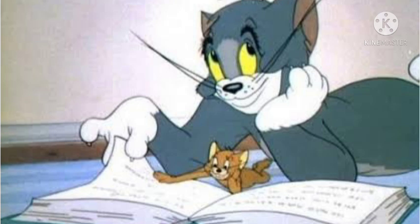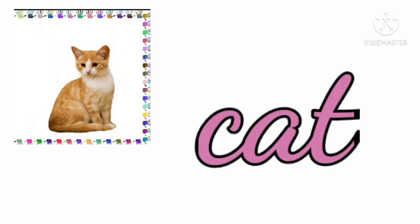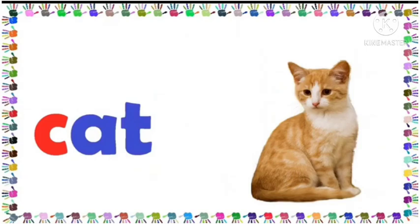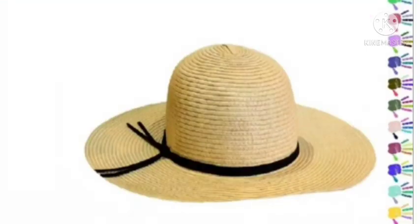Again I am showing you another example of AT family words. See the picture — this is very familiar to us. It loves to eat fish. The name of this animal is cat. The spelling is C-A-T, cat.